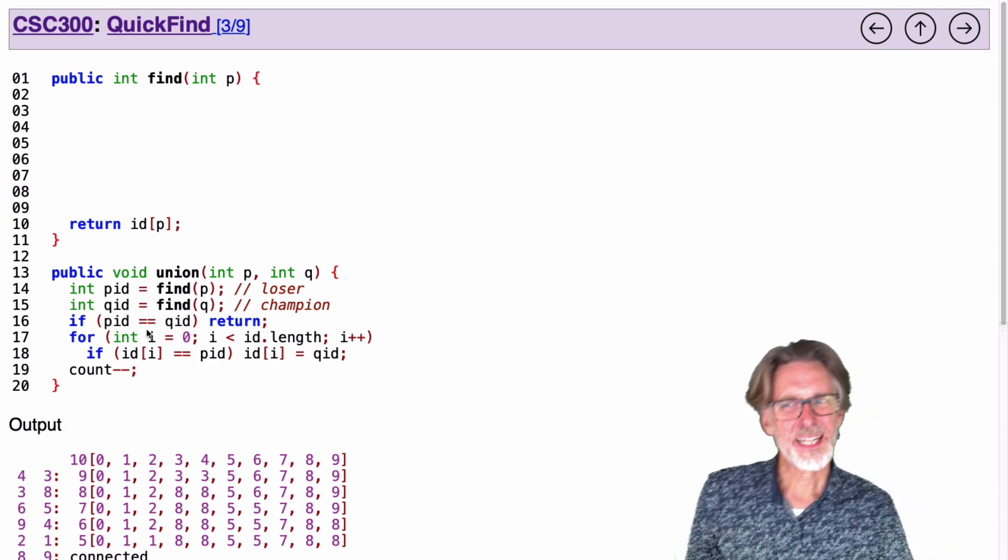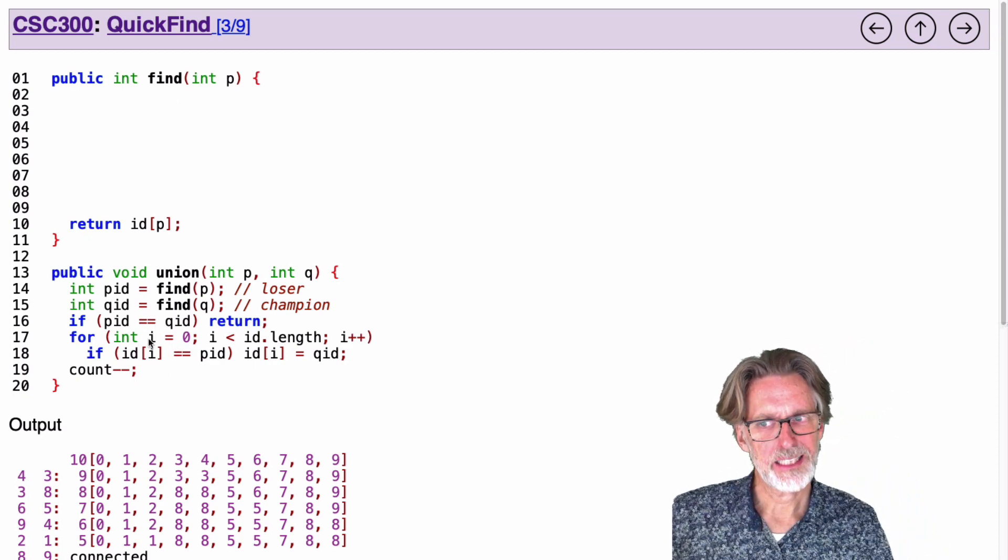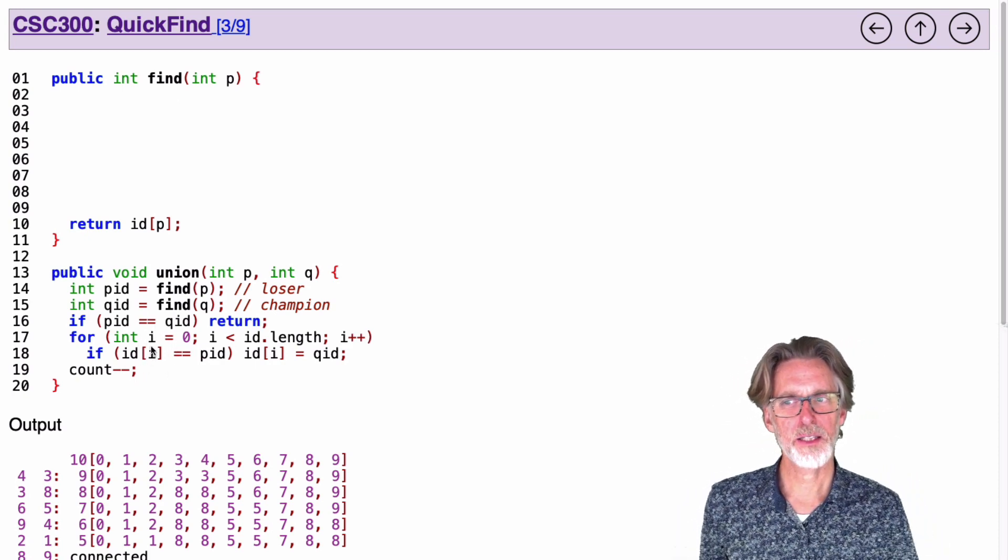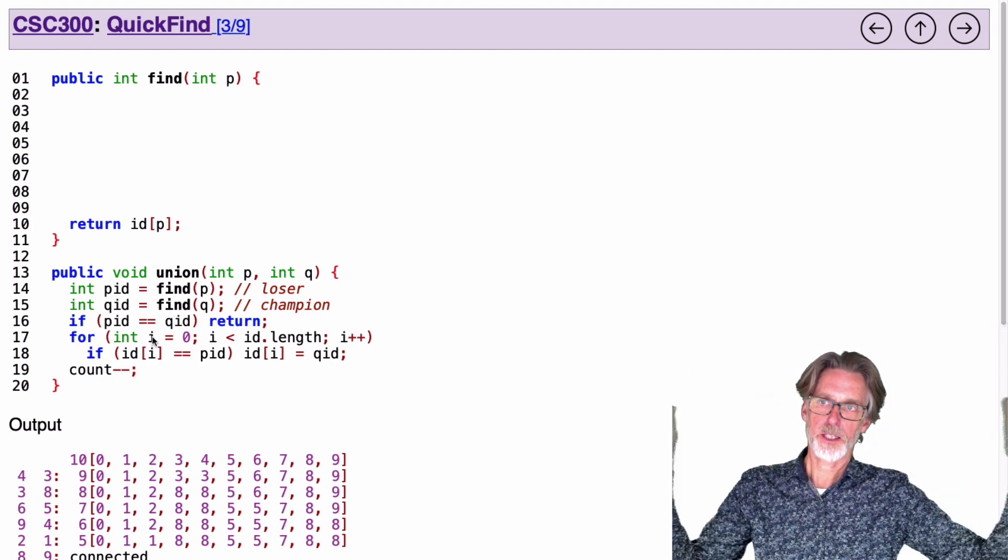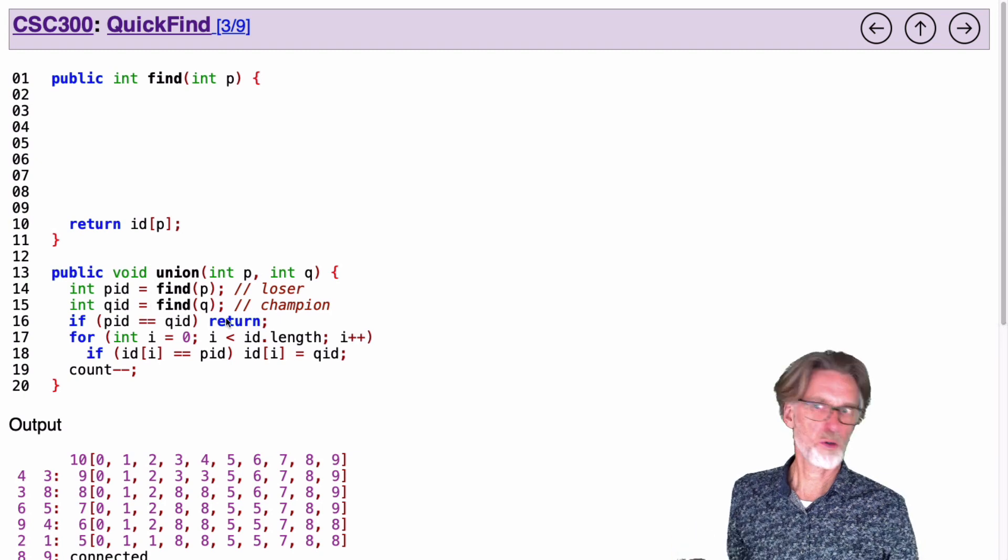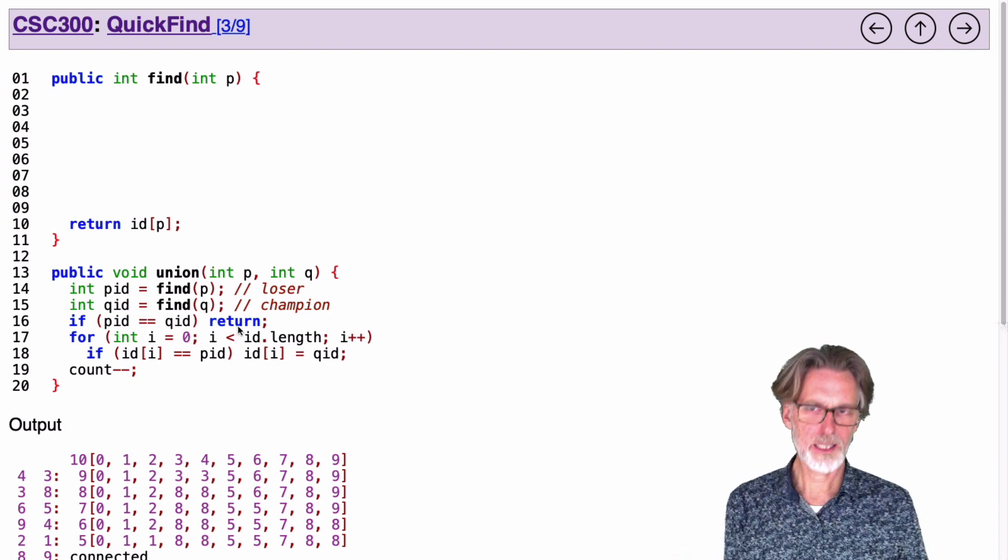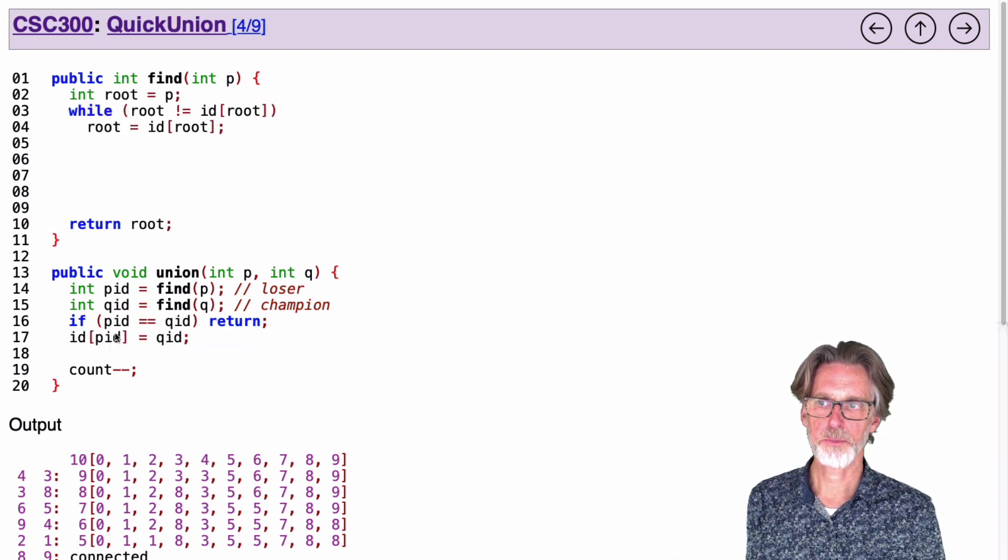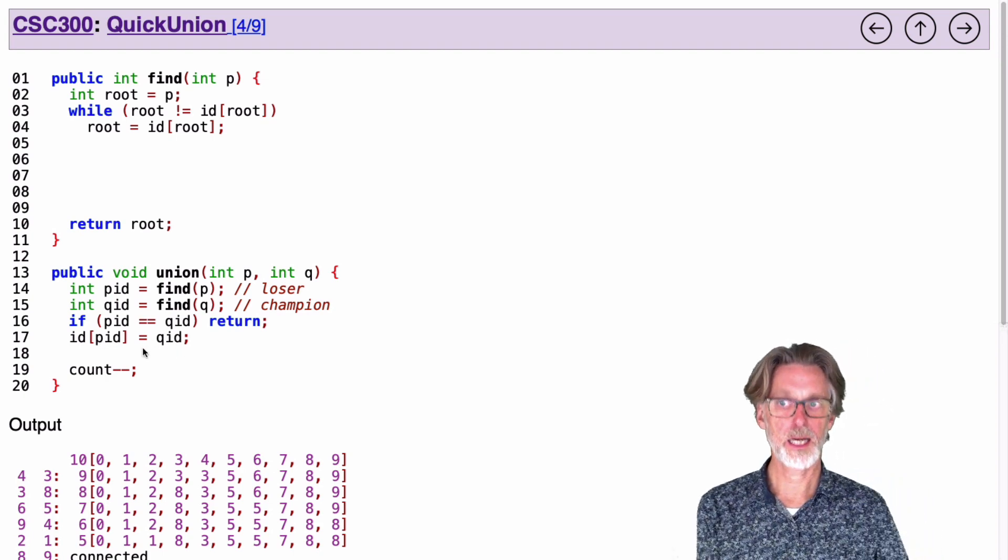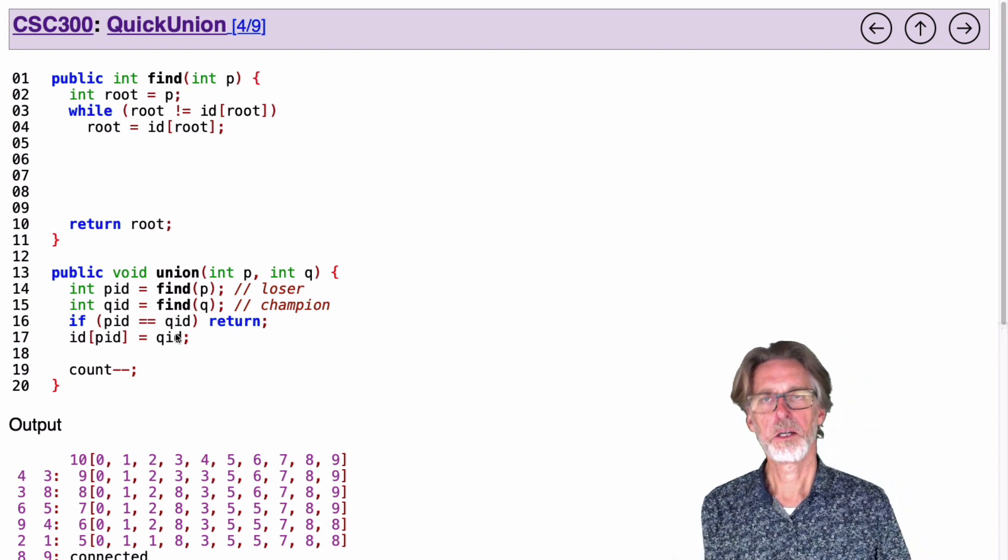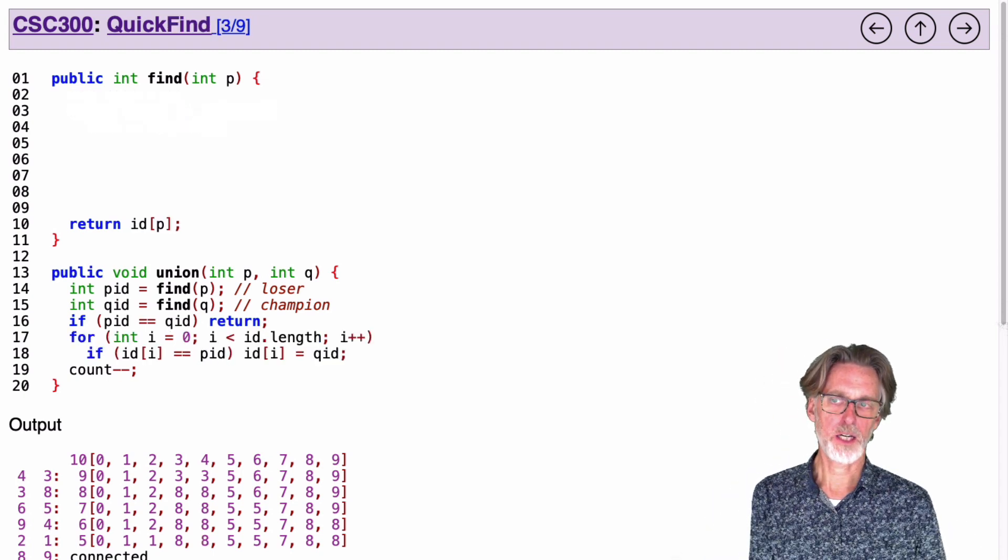So why don't we try the idea of removing the loop? Instead of updating everybody's champion, we'll just update the champion for the loser. We can just update the ID of the loser to hold the ID of the champion. That's fine. We've gotten rid of the loop now.